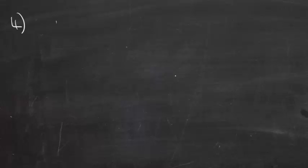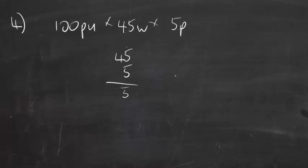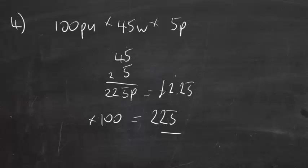Question: 100 pupils correctly completed a sponsored spelling test of 45 words. Each pupil was sponsored at 5 pence per word. How much money did the pupils raise in total? Solution: We have to times all these numbers together. 45 times 5p is £2.25. Times 100, you're moving the decimal two places along, giving £225.